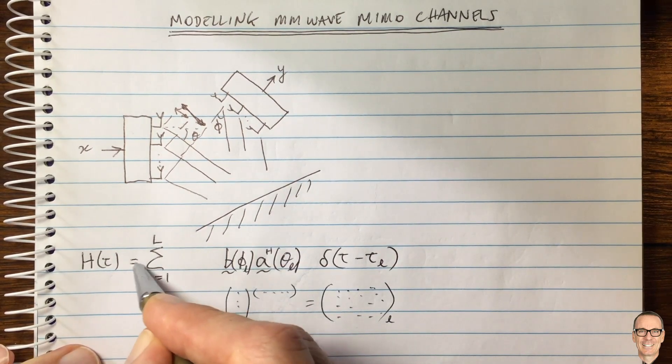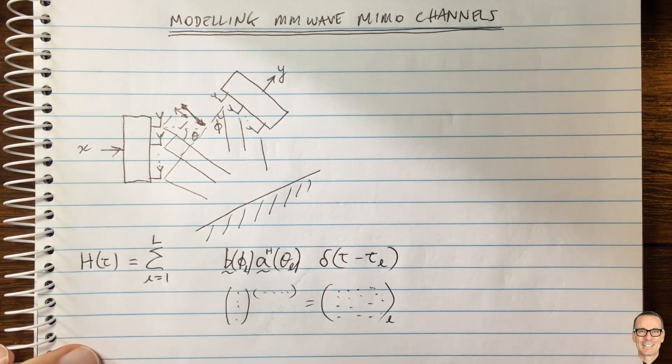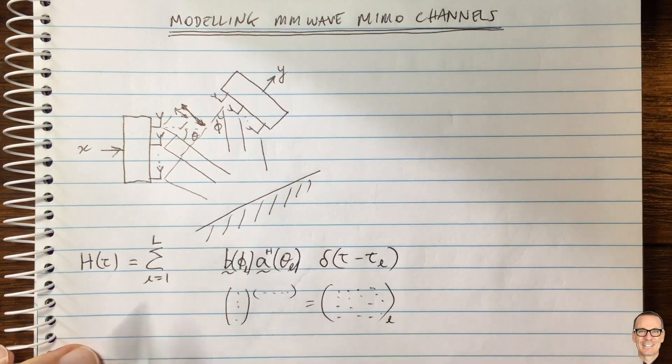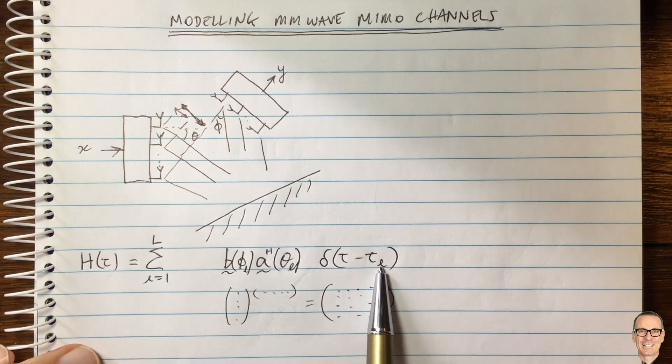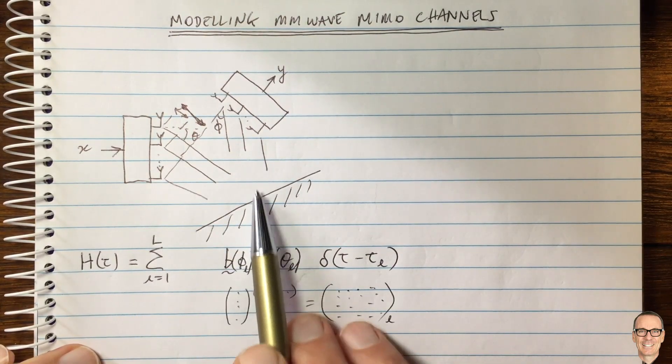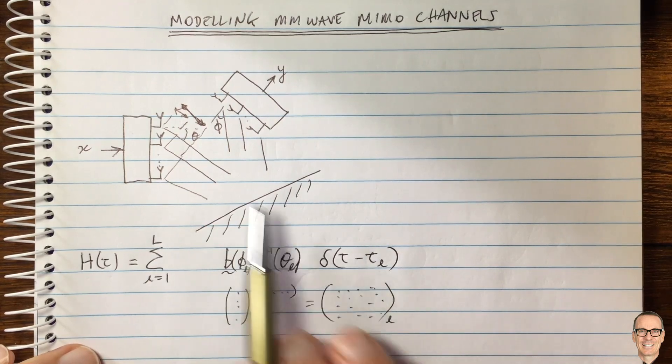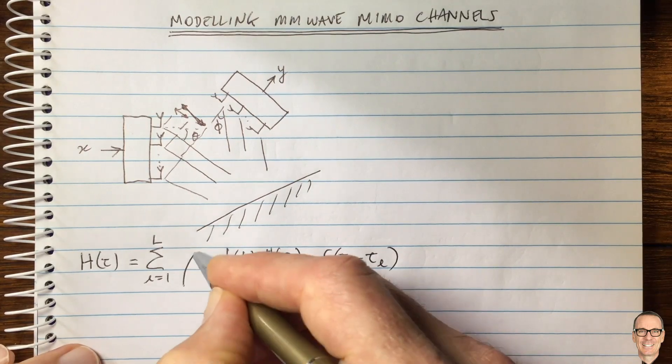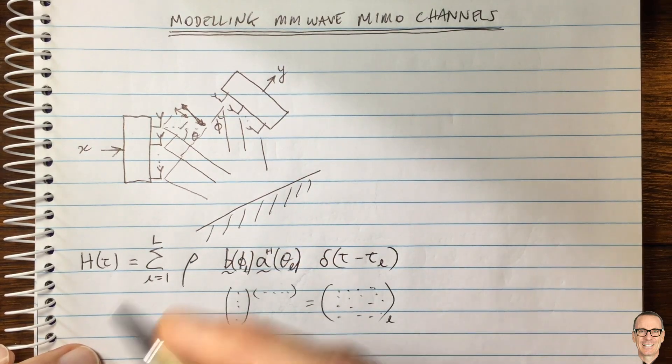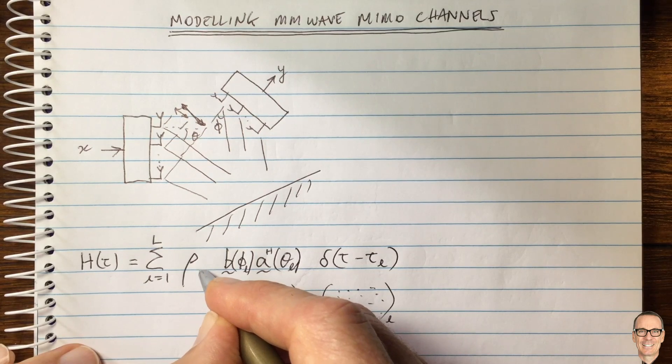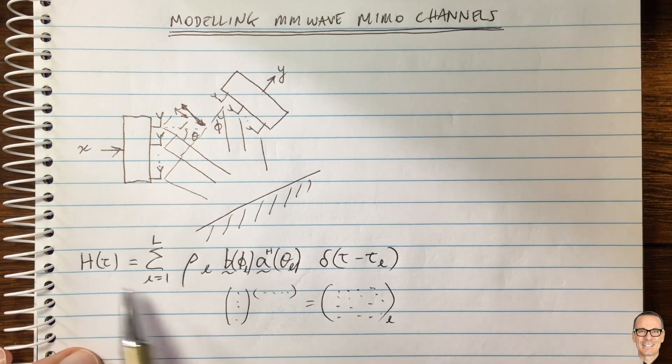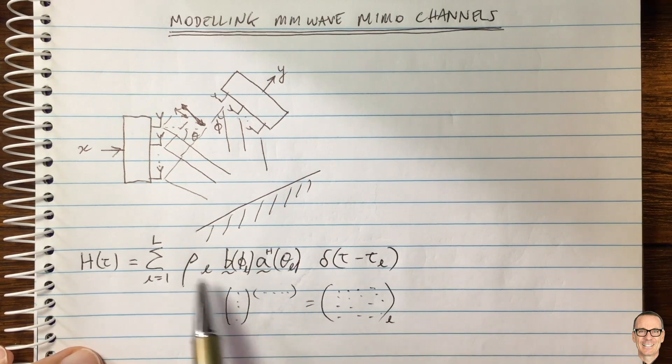Okay, so this is our getting there, but we're missing still one term. And that term is the term for the gain of this reflection. So this reflection is going to have, of course, a distance, which gives us the tau, which means there's some loss. And of course, the gain will be related to that distance, but also it will be related to the properties of the reflector on the wall here. So we're going to give that a value rho. And we're going to call that for the L path, of course. And then we're going to also note, so this is the rho for the L path, that's the gain.